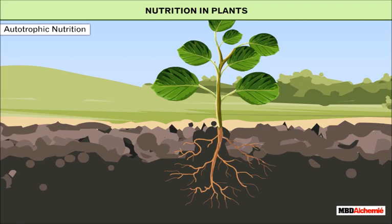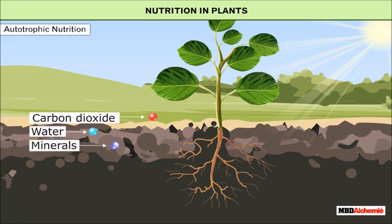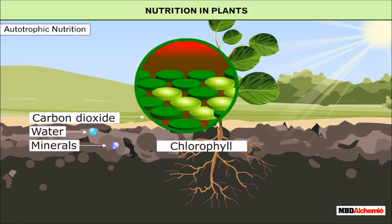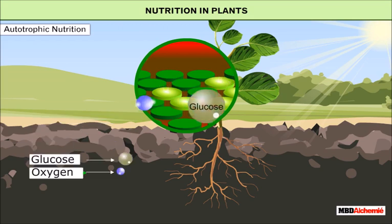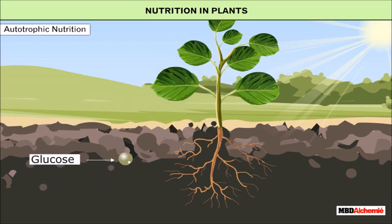Autotrophic nutrition: plants prepare their food in the presence of sunlight, carbon dioxide, water, and minerals. Chlorophyll present in the leaves traps solar energy and converts it into chemical energy. As a result, glucose and oxygen are formed.